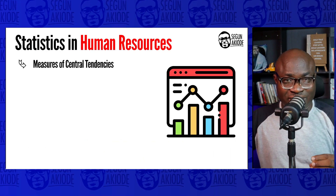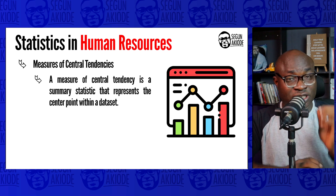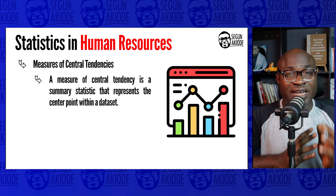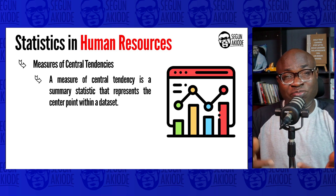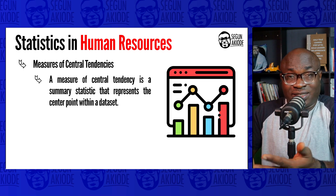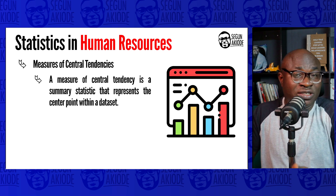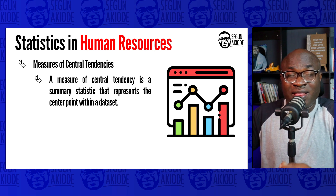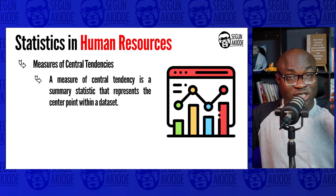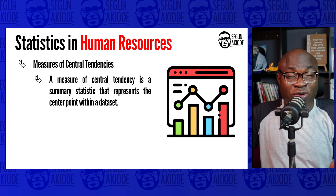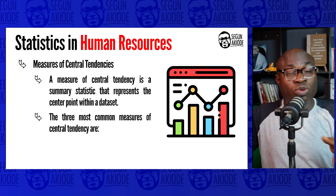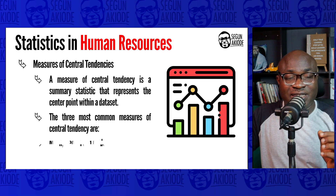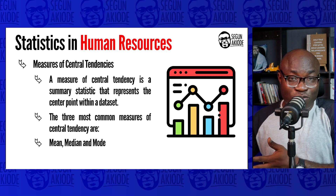Measures of central tendency. A measure of central tendency is a summary statistic that helps to represent the center point within a data set. When you have a data set and you want to describe it, a measure of central tendency gives you a summary, telling you about the center point within that data. There are three most common measures of central tendency: your mean, your median, and your mode.